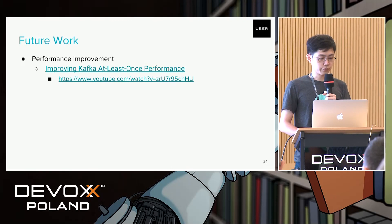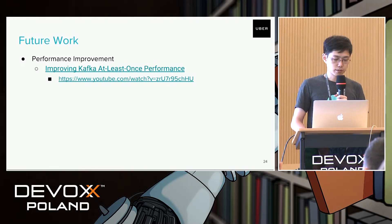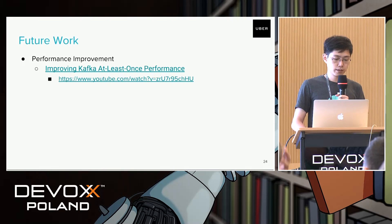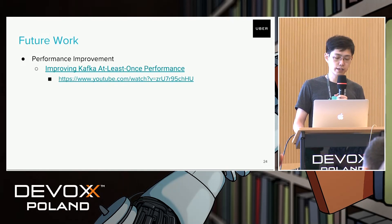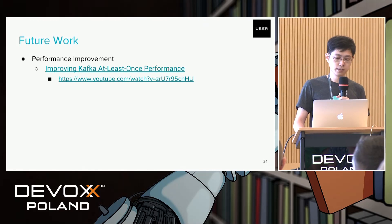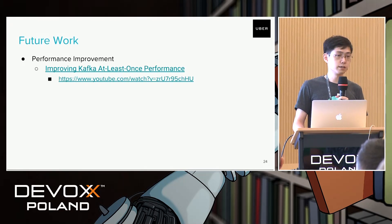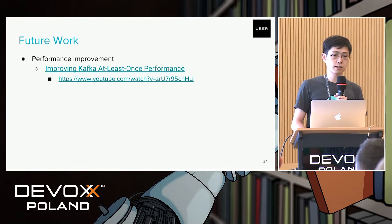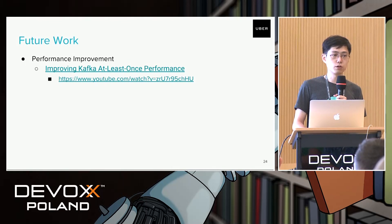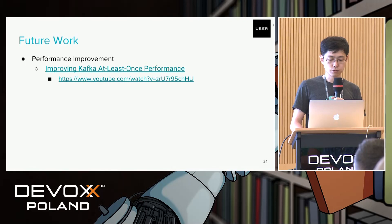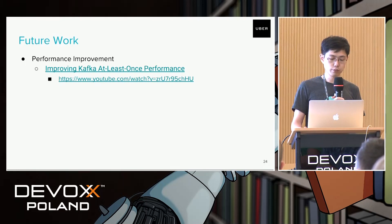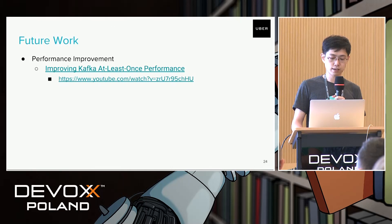For future work, we want to further improve the performance of the XDC Kafka cluster. We have already done a lot of work to improve the performance of our at-least-once Kafka cluster and deployed those improvements to the XDC Kafka cluster, but there is still more room to improve. There is a link to a YouTube video about the performance improvements we have already done on the XDC Kafka cluster.